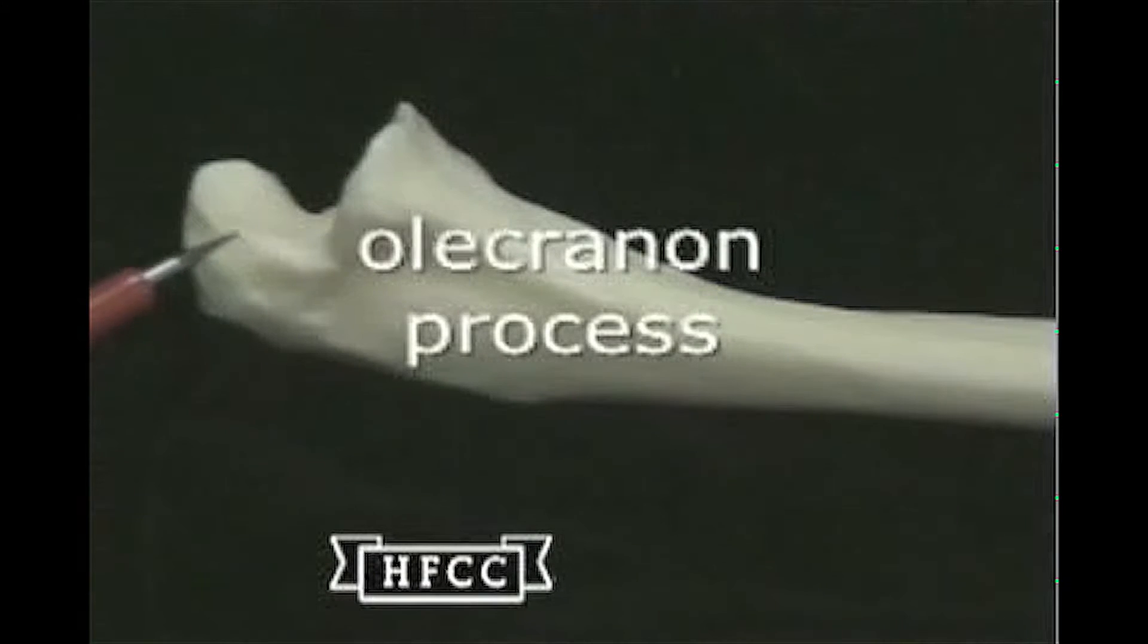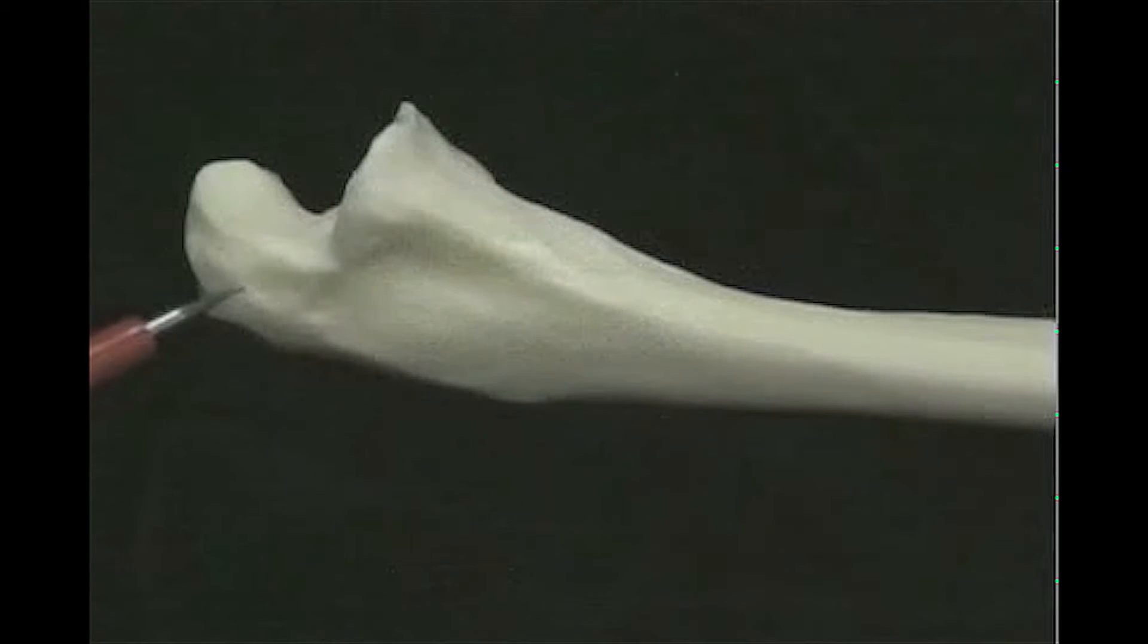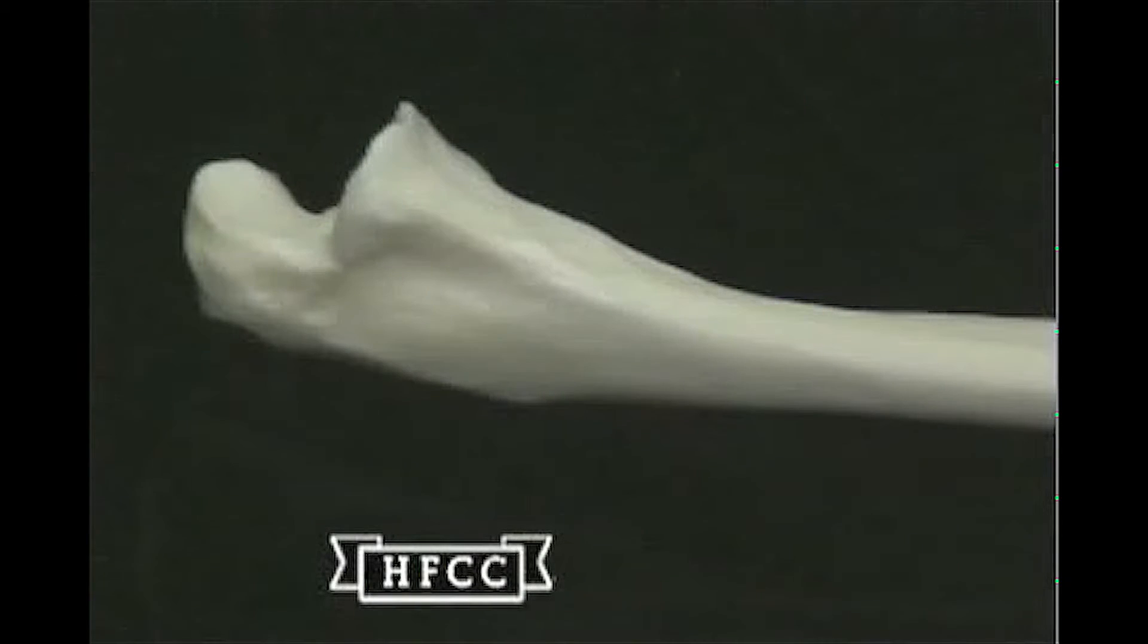Next will be the bump there, called the olecranon process, or the tip of the elbow. That's what you can feel when you flex your elbow and that tip that protrudes, that's what it is.